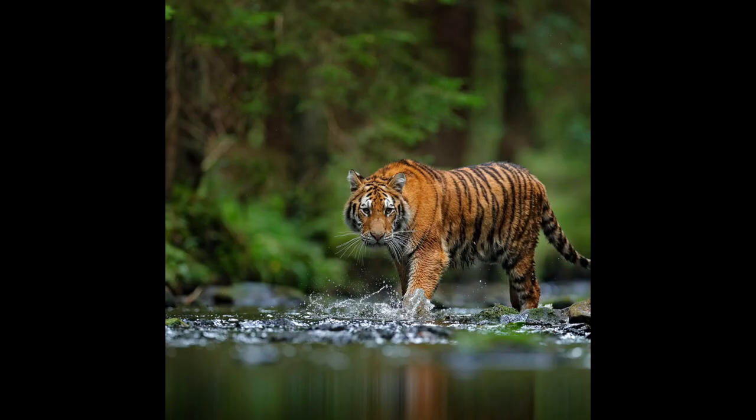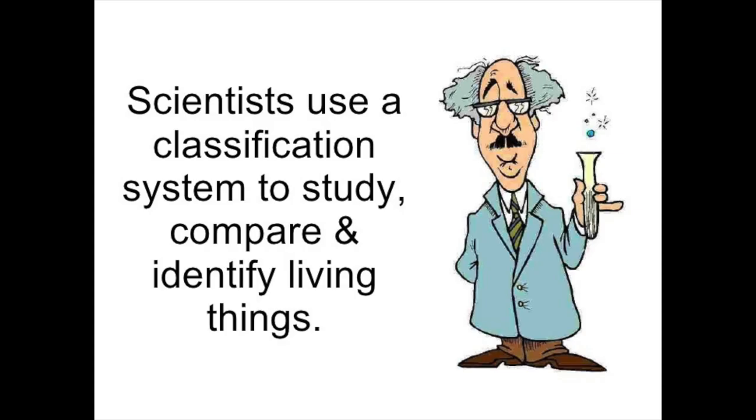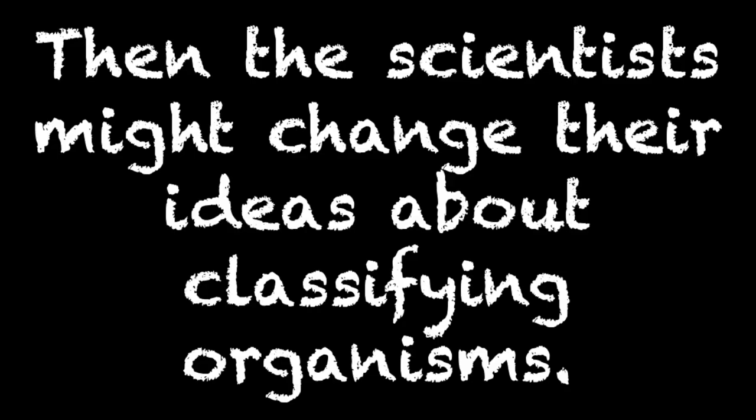The lion's scientific name is Panthera leo. Its close relative, the tiger, is in the same genus. The tiger's species name is tigris, so its scientific name, Panthera tigris, tells you it is similar to lions and other animals in the genus Panthera. This scientific naming helps to avoid confusion. Scientists classify organisms based on what they know about them. When they learn more about organisms and their structure, they also learn more about how the organisms are related to other living things. Then scientists might change their ideas about classifying organisms.